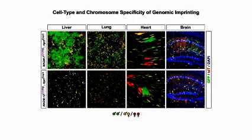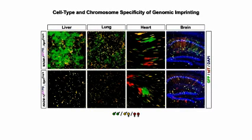We first induced UPD for chromosome 7, shown in the upper panel, and for chromosome 12 in the lower panel. Cells with paternal UPD are labeled in green and cells with maternal UPD are labeled in red in both cases. When we compared these UPDs in different tissues, we noticed dramatic differences in the ratio of green to red cells, especially for chromosome 7. In the liver and lung for chromosome 7 UPD, the cells with two paternal chromosomes were much more abundant than cells with two maternal chromosomes, indicating a growth advantage of paternal UPD cells.